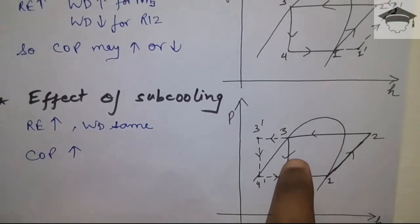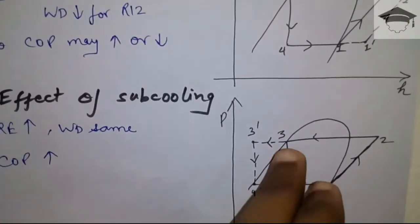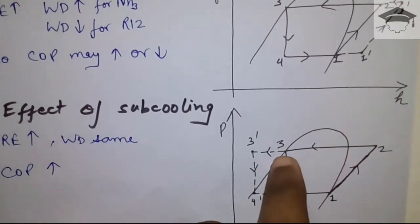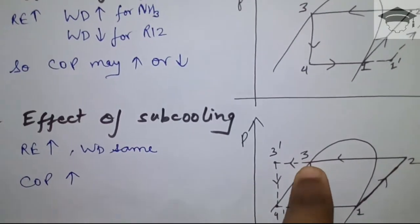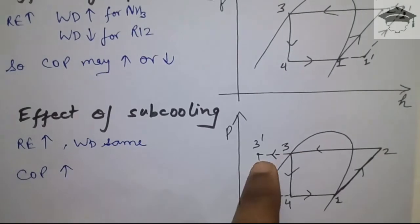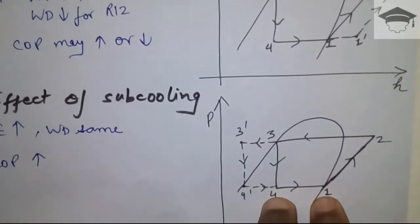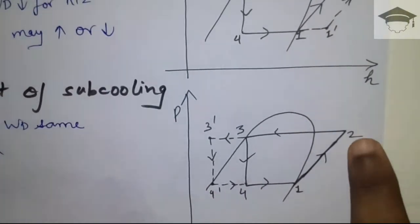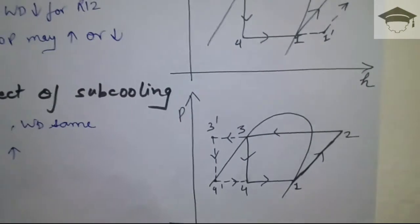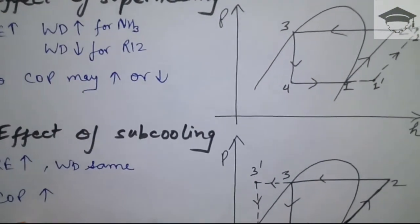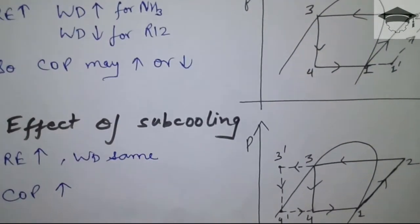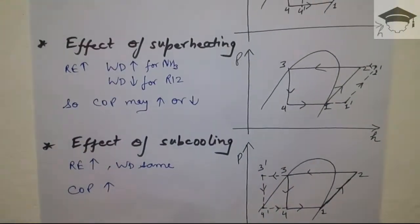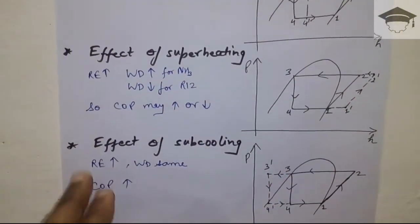Moving on to the last parameter: effect of sub cooling. Sub cooling is the process from point 3 to 3 dash, after the heat is rejected in the condenser from point 2 to 3. When we complete the cycle, the refrigeration effect increases from h1 minus h4 to h1 minus h4 dash. The work done remains the same at h2 minus h1. Since the numerator increases and the denominator stays the same, the COP increases. So sub cooling is the only parameter that is beneficial.